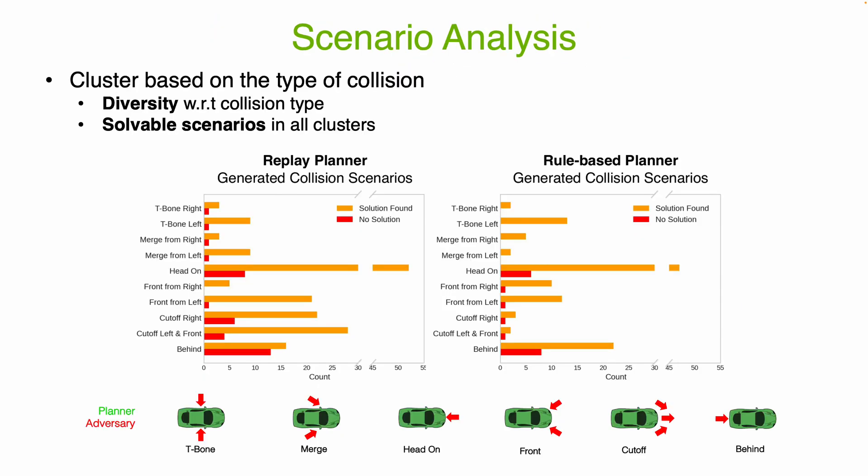By clustering based on collision type, we see that Strive generates a diverse set of solvable scenarios. As shown in the paper, these can then be used to improve a planner by uncovering fundamental flaws and helping tune parameters.